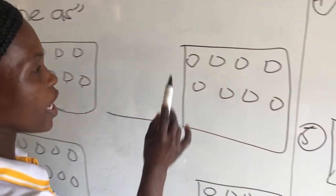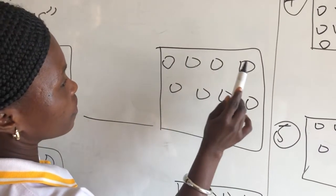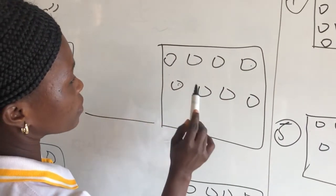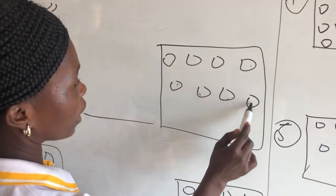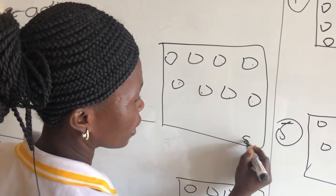Let's count here: 1, 2, 3, 4, 5, 6, 7, 8. How many members? 8.